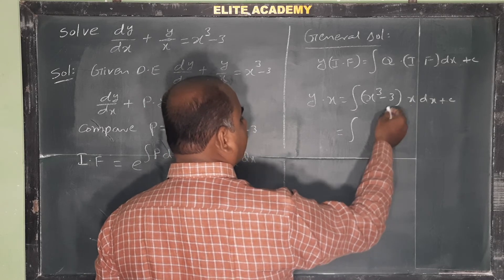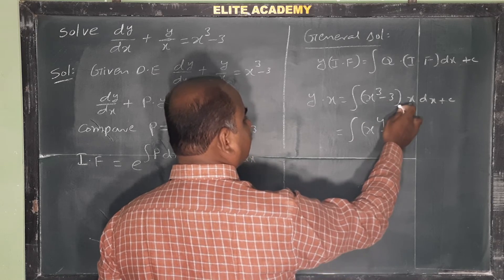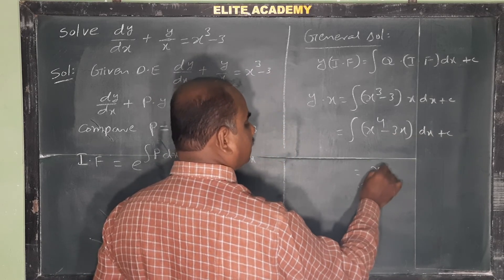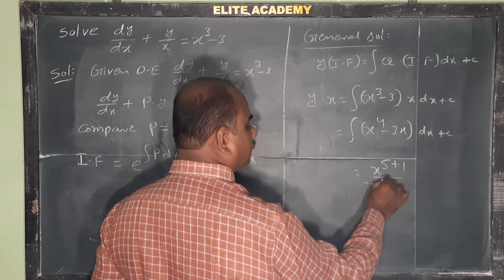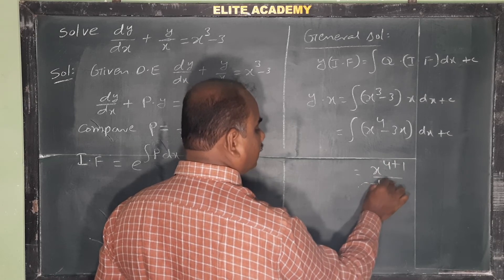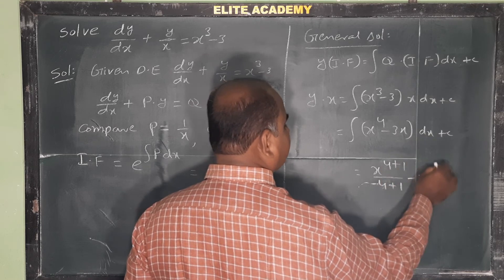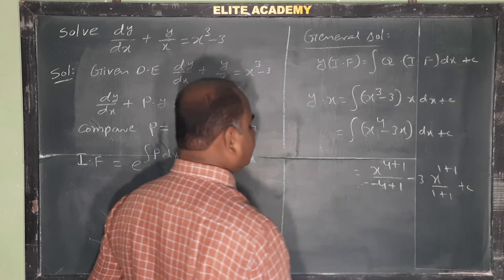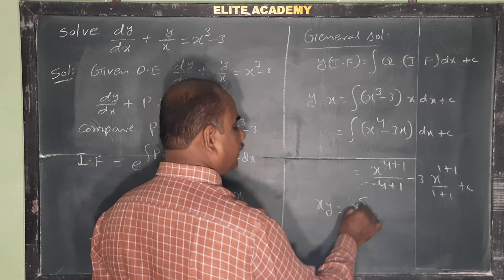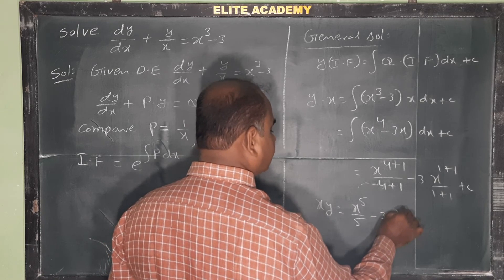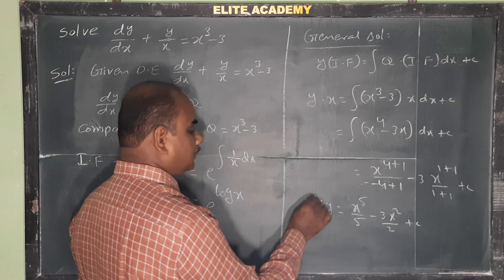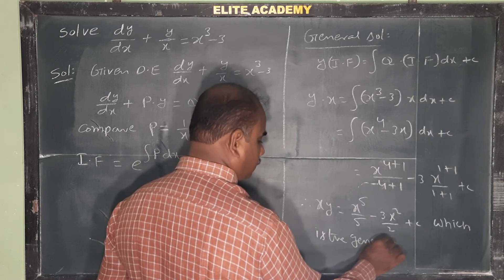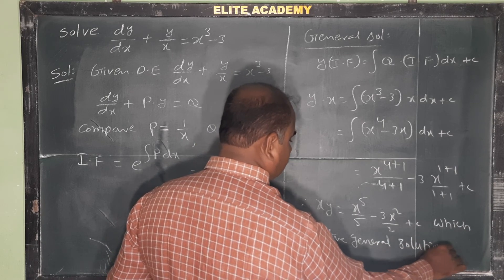Multiplying x with (x³ - 3) gives x⁴ - 3x. So we integrate: integral of x⁴ dx minus 3 · integral of x dx plus C. Applying the formula x^(n+1)/(n+1): x⁴ integrates to x⁵/5, and x integrates to x²/2. Therefore, the general solution is x·y = x⁵/5 - 3x²/2 + C.